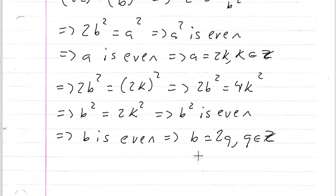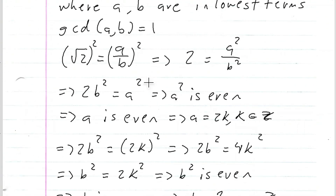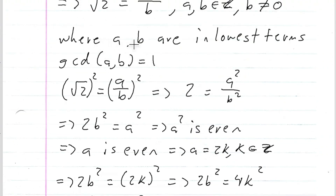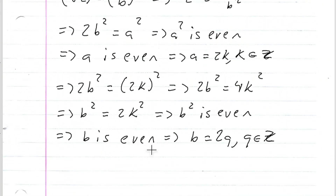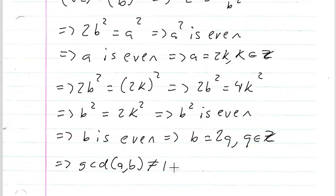There's our contradiction. We have A is even, so A equals two K, and B is even, so B equals two Q. This means A and B have a common factor of two. But we assumed the GCD of A and B was one — yet we've shown the GCD is at least two, meaning A and B share a common factor of two. This is our contradiction.